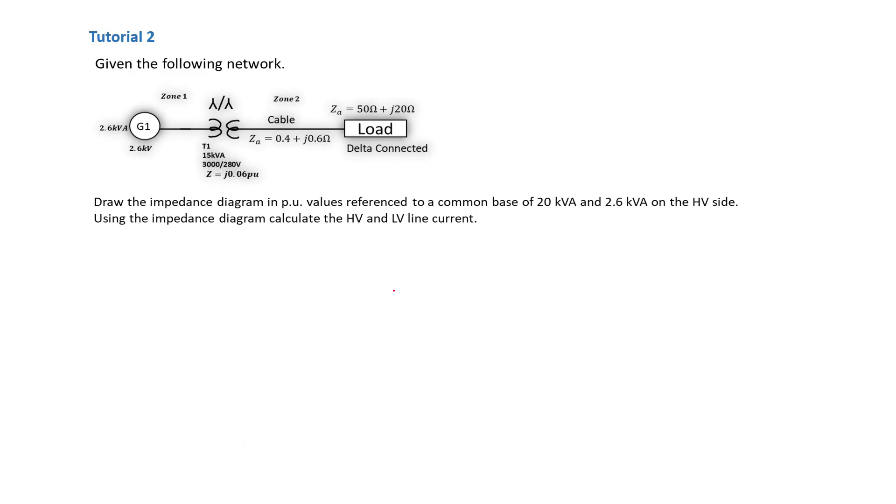We have a network diagram that is given to us. The network is being supplied by a generator rated at 2.6 kVA, feeding a transformer of 15 kVA going through a cable to a delta connected load with an impedance of 50 ohm plus j20 ohm. That is an inductive load, which means it could be a motor, a machine, or anything that's not a capacitive load.